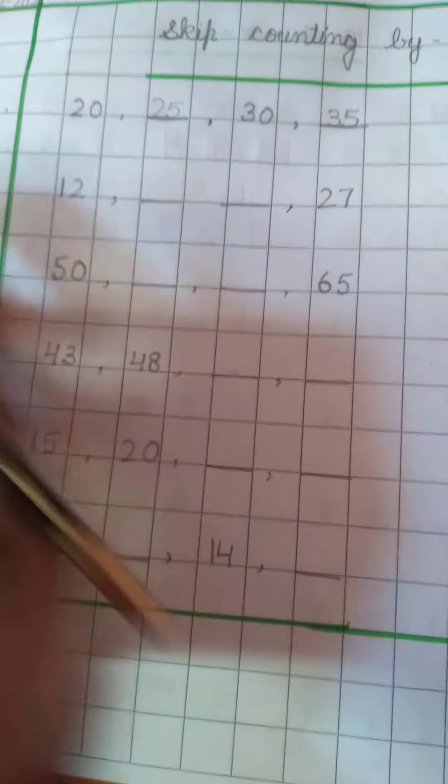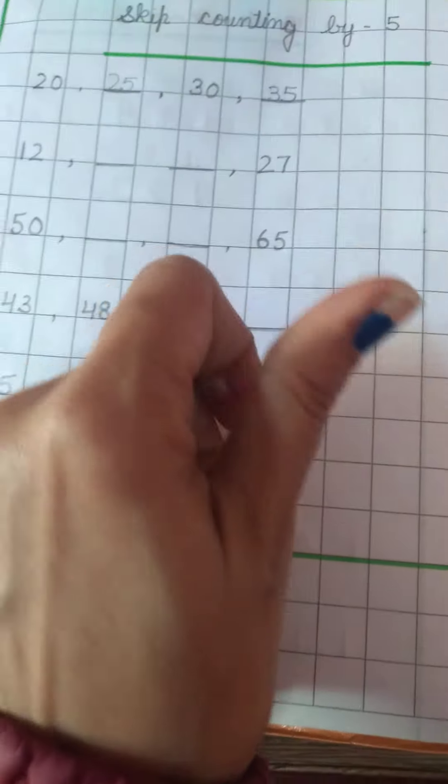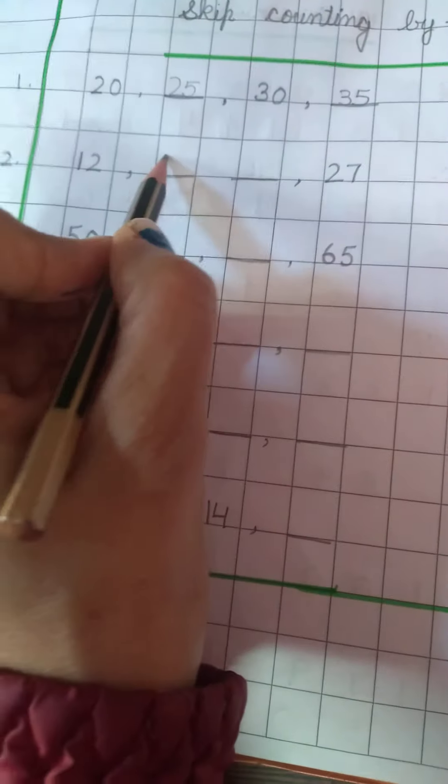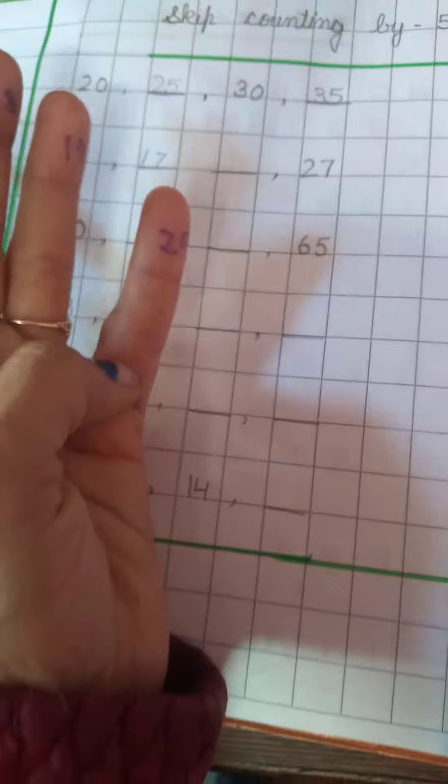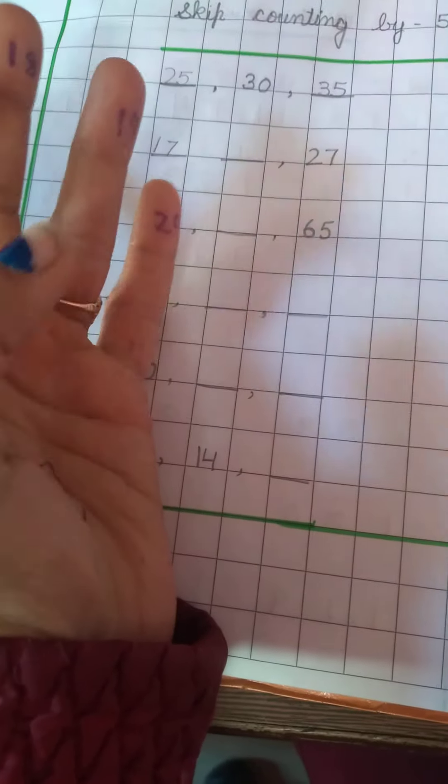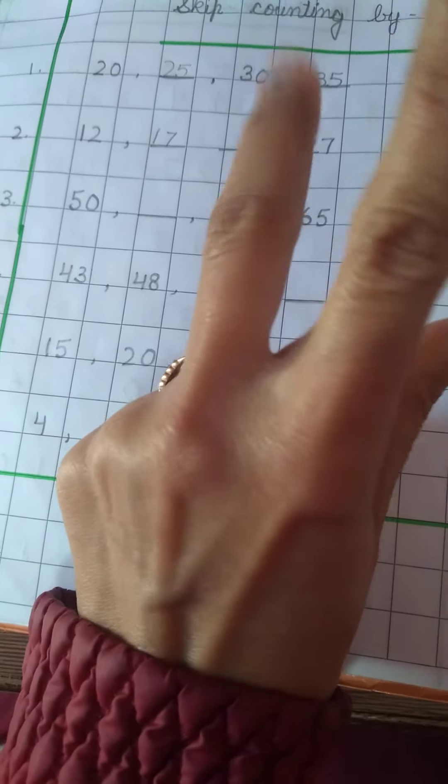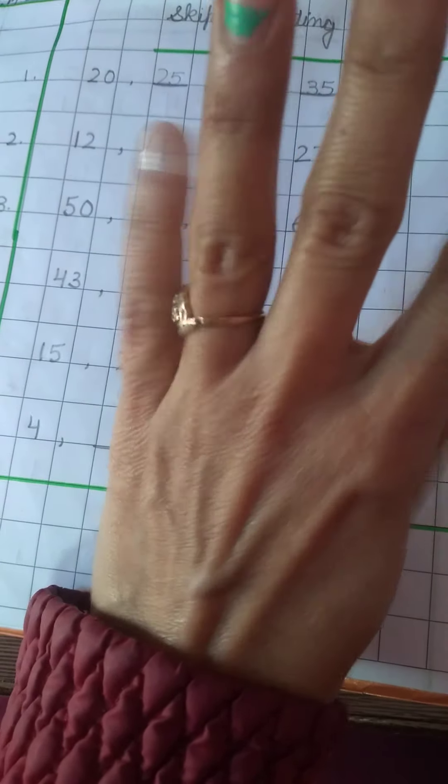Here after 12: 13, 14, 15, 16, 17. 17 will come like this. 17 and then 18, 19, 20, 21, 22. Or 18, 19, 20, 21, 22.